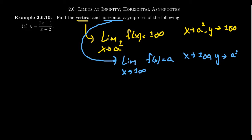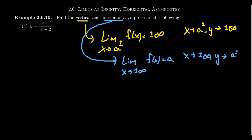The behavior around a vertical asymptote is when you get close to x equals a, the y coordinate will explode to either positive or negative infinity. On the other hand, when it comes to a horizontal asymptote, as x goes to the extreme — as x explodes to the far right or far left — the y coordinate will asymptotically approach some finite number.